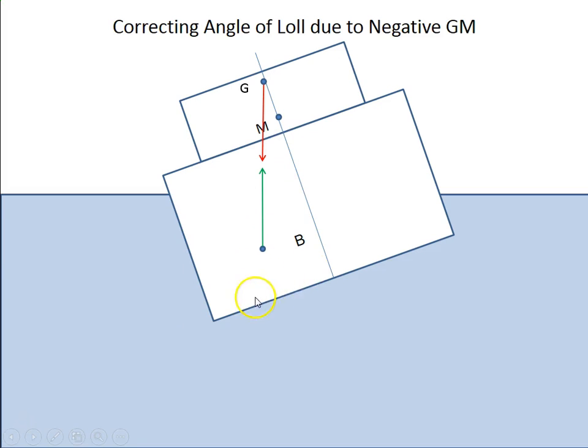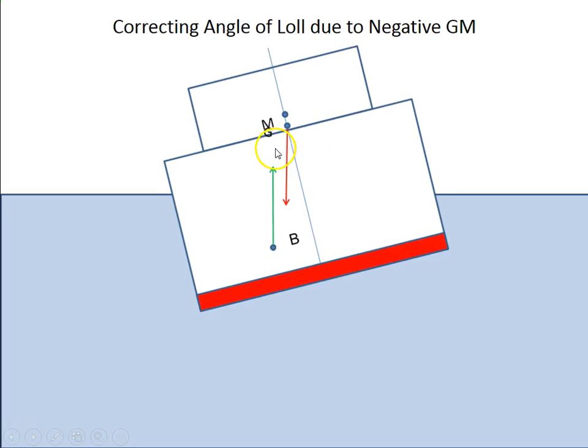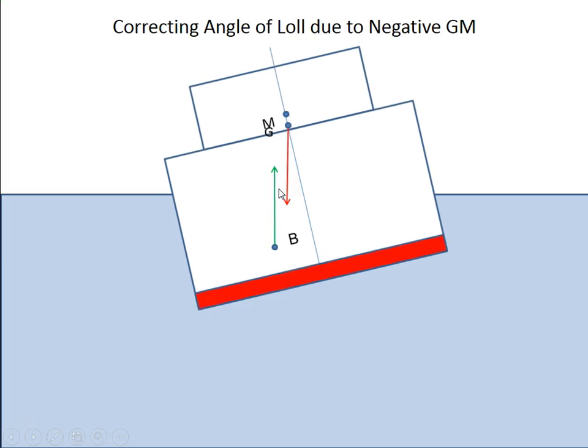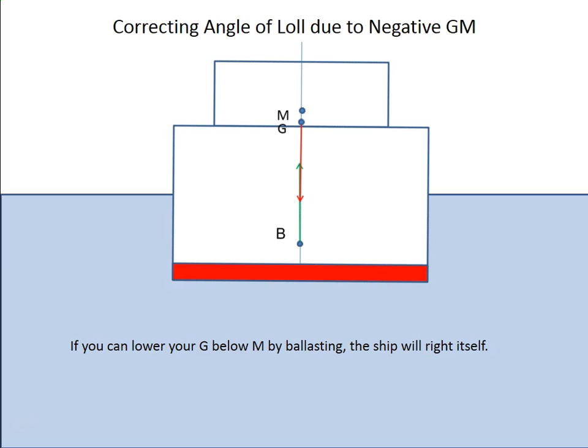But I'm just going to go ahead and ballast evenly across both tanks here. And you'll see that that brings G below M. And as soon as that happens, you saw that G, when it was high, was in line with B. But if I can bring that down, you can see that B now, oh, look at that. We have another GZ here, an arm. And in this case, it's a positive arm. And the vessel is going to right itself.